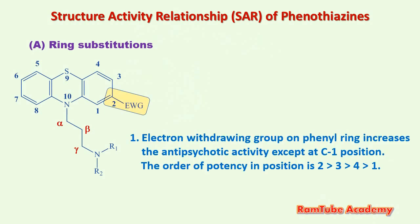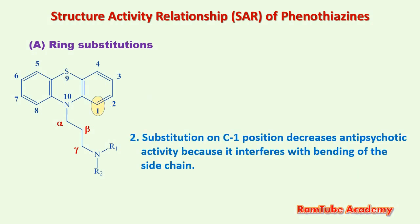Starting with ring substitutions: first, electron-withdrawing groups on the phenyl ring increase antipsychotic activity, except at the C1 position. The order of potency by position is: C2 > C3 > C4, with C1 being least potent. Substitution at C1 decreases antipsychotic activity because it interferes with bending of the side chain. This tells us that bending of the side chain toward the ring is essential for binding with the dopamine D2 receptor.